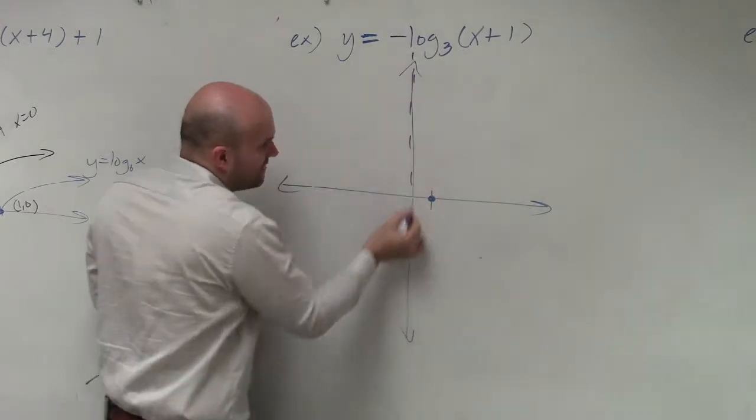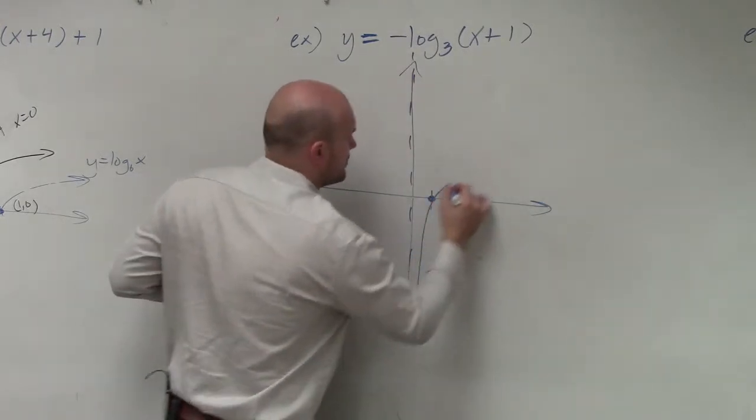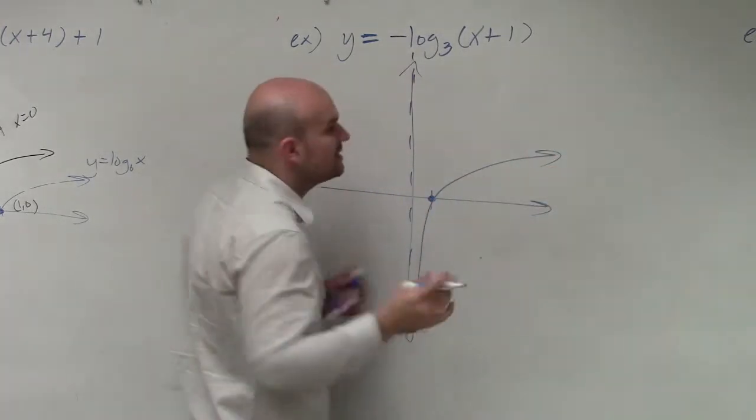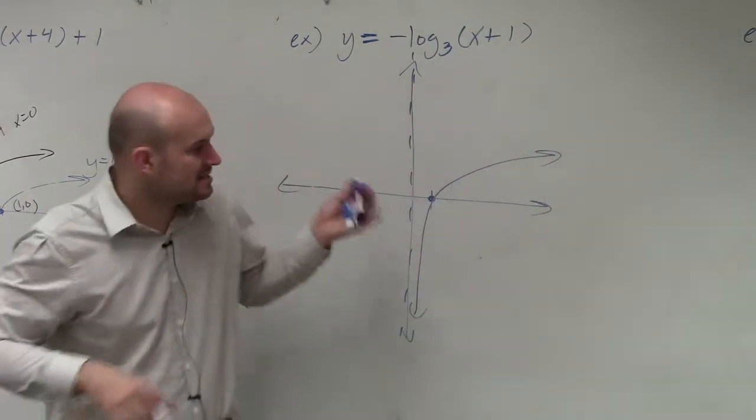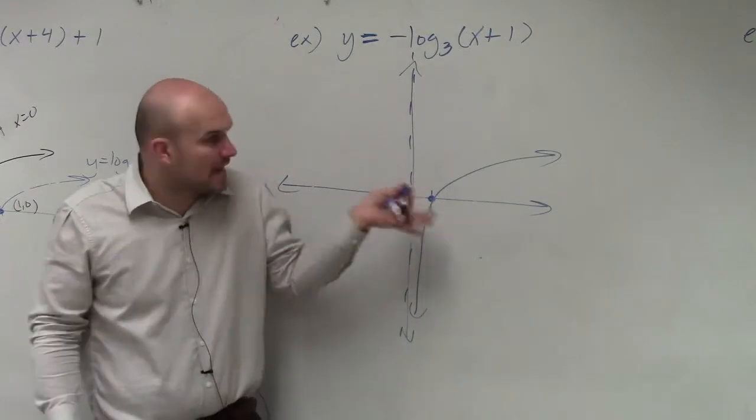And it's going to have a vertical asymptote. So it's going to look something like this. And again, all I want you to be focused on when dealing with logarithms is that the x-intercept is at 1.